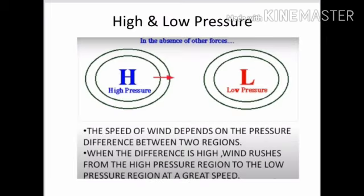The speed of wind depends on the pressure difference between two regions. When the difference is high, wind rushes from the high pressure region to the low pressure region at great speed. If the difference in pressure is less, the wind blows with less speed.